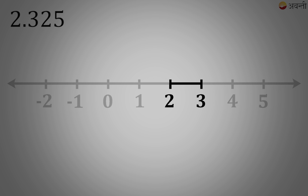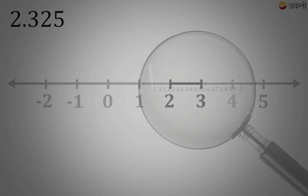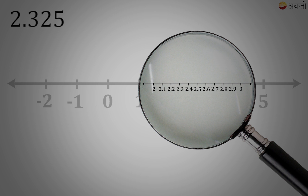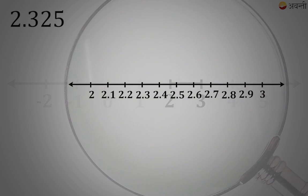If I magnify the area between 2 and 3, we know that distance between 2 and 3 is 1 unit. If I divide this 1 unit into 10 equal parts, each part would become one tenth, that is 0.1 units.